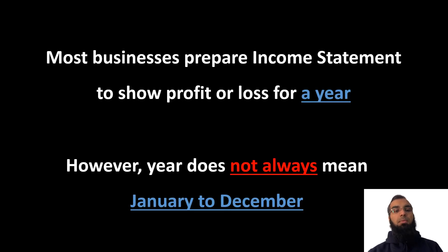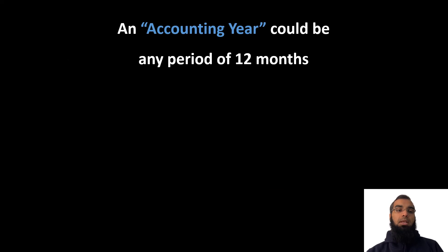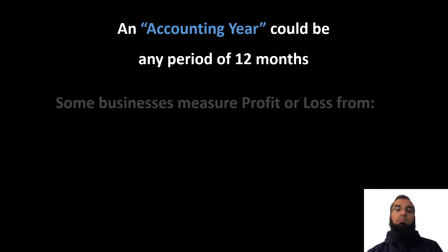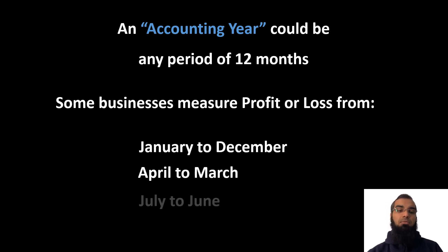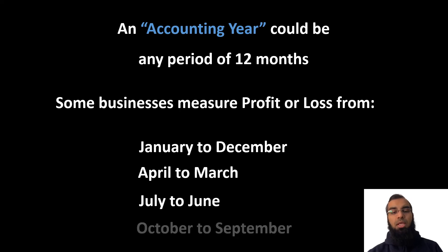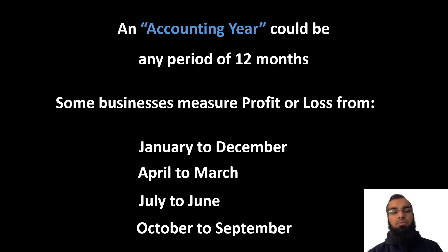Most businesses prepare an income statement to show profit for an entire year. However, this year does not always mean January to December — that is a calendar year. An accounting year could be any period of 12 months. Some businesses measure profit from January to December, some from April to March, some from July to June, and some from October to September. These are the four periods that are usually followed.